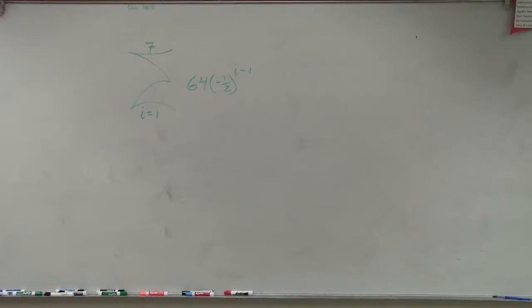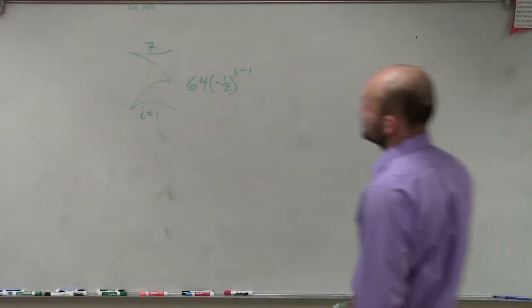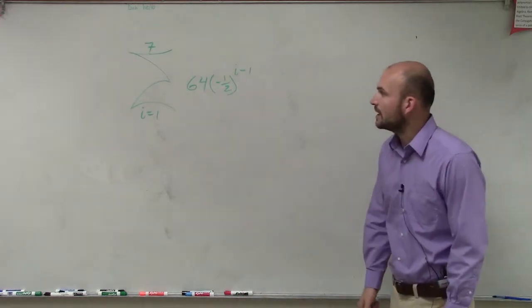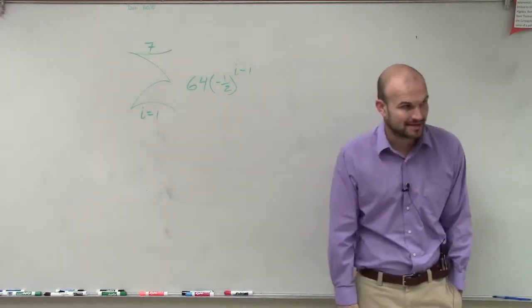On this problem, we have the summation of seven terms, starting at one, and we have the rule 64 times negative 1 half raised to the i minus 1.